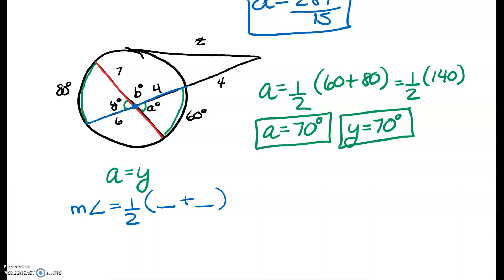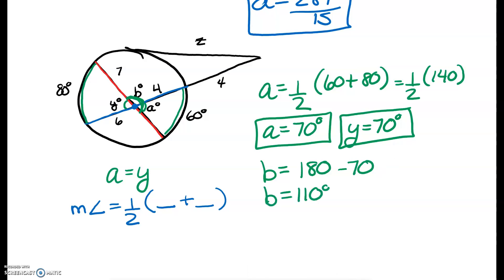How do I find b? We don't even need a formula because a and b are linear pairs — this is a line, so they have to add to 180. So b is going to be 180 minus a. So b is 110 degrees.